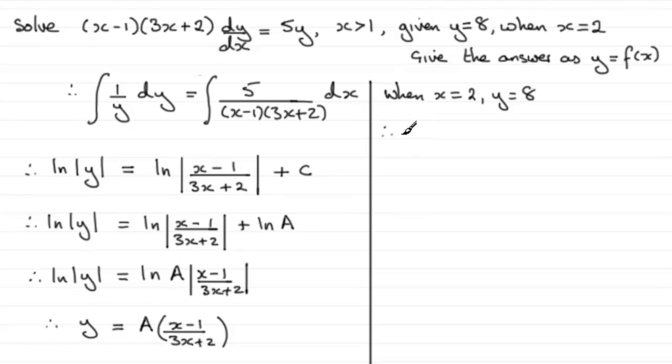For y we've got 8 = A multiplied by (2-1), which is 1, over (3×2+2), which is 8. So we've got (1/8)A. If I multiply both sides by 8, it follows that A must be equal to 64.